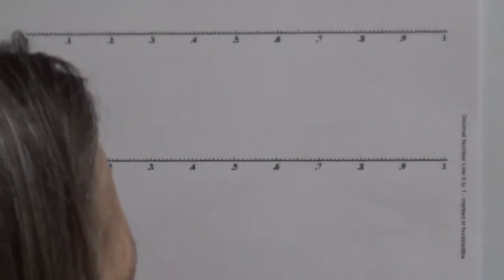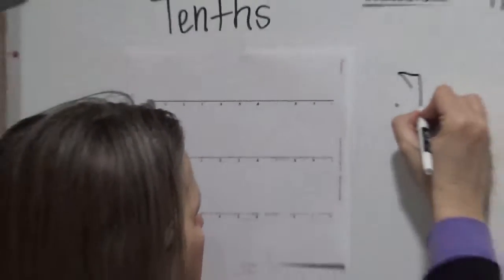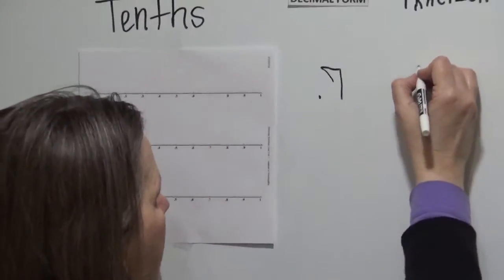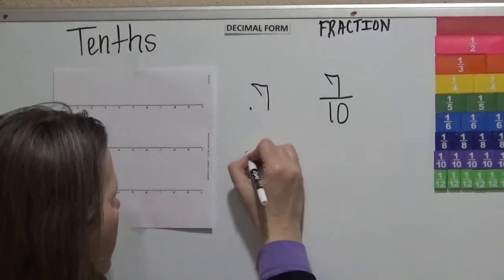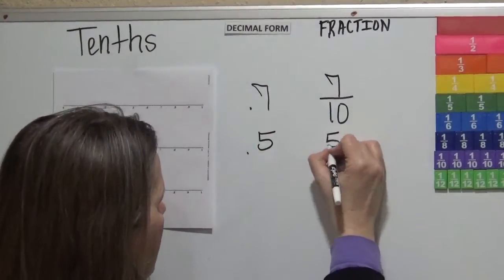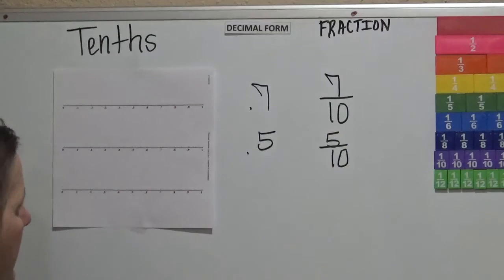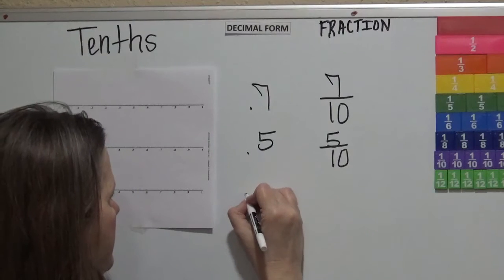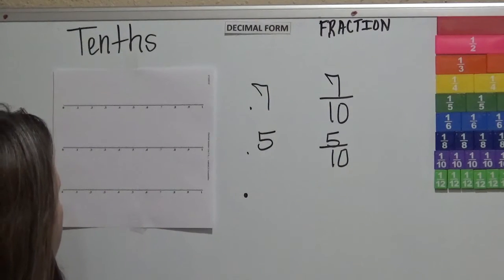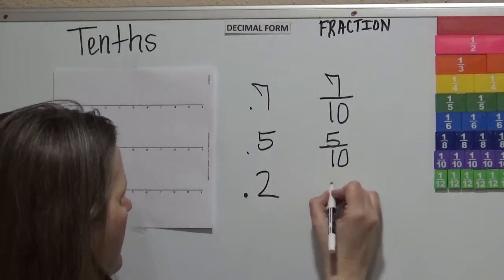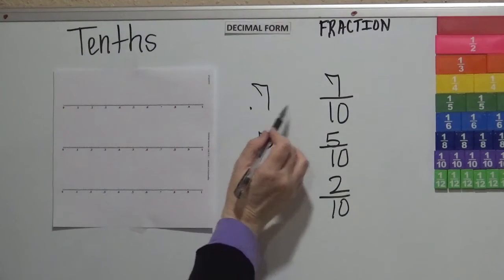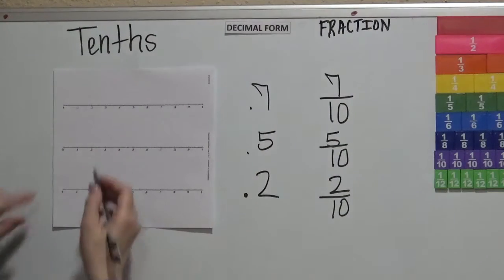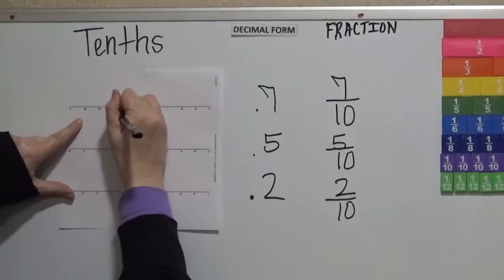So the decimal form, we're going to say seven. And the fraction of that would be seven out of ten because we're talking about dimes. Then we could say five. Five out of ten would be the fraction. And then we could say two. Two out of ten.